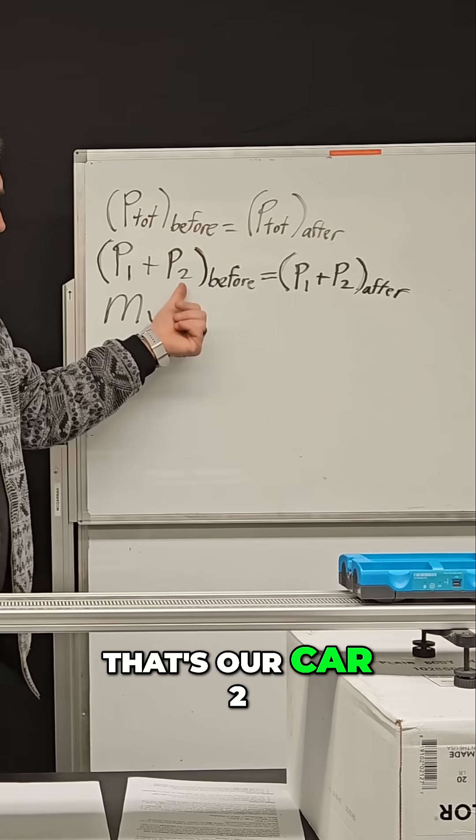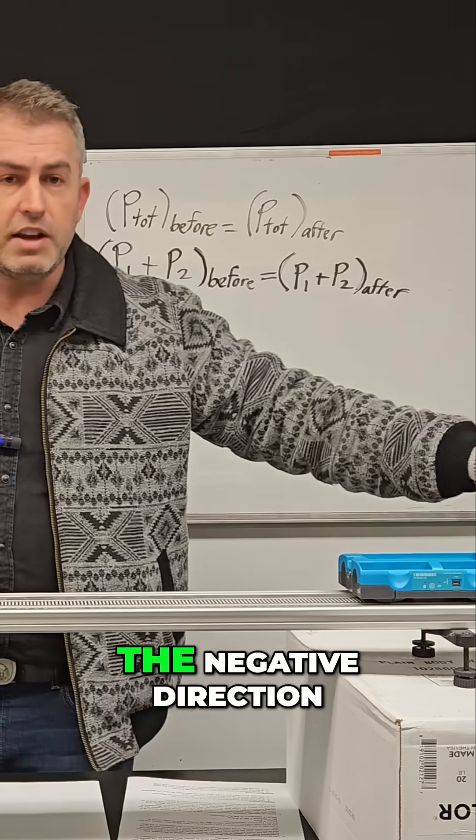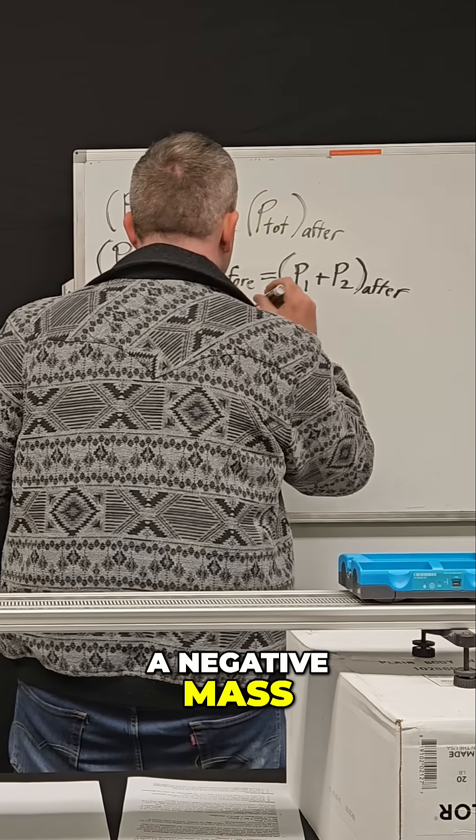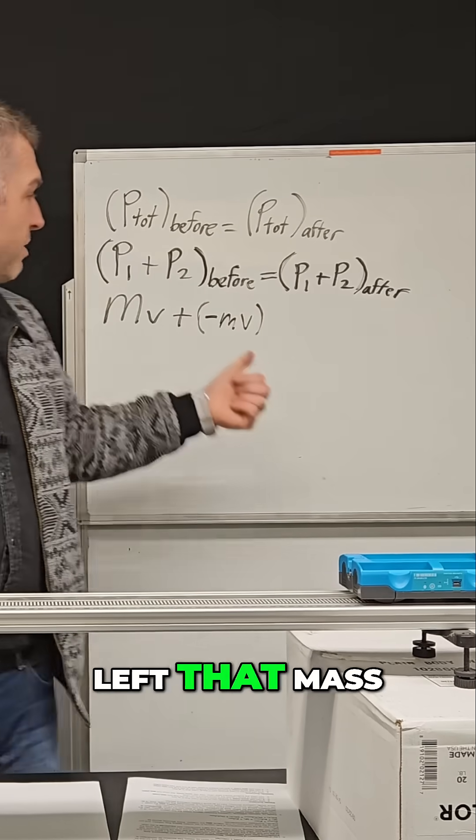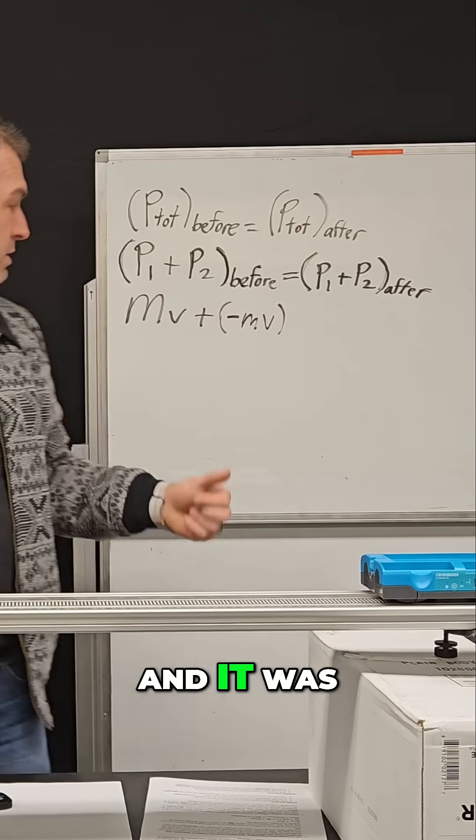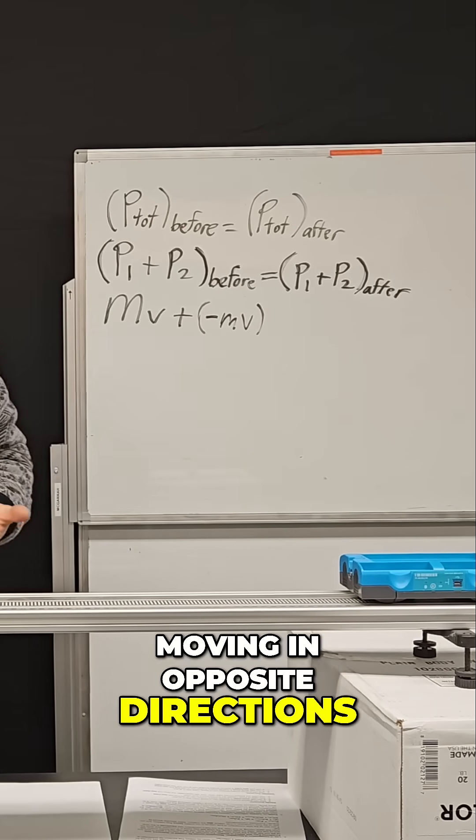For the blue car, that's car two, I have to add its momentum up. It was moving in the negative direction, so we're going to say it has a negative mass times some velocity. I left that mass as a smaller number because it is the less massive car, and it was moving at an equal velocity as the yellow car, but they were moving in opposite directions.